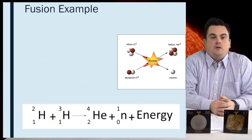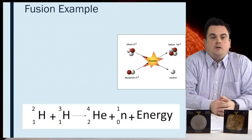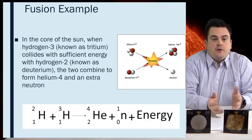Fusion example. In the core of the sun, when hydrogen-3, known as tritium, collides with sufficient energy with hydrogen-2, known as deuterium, the two combine to form helium-4 and an extra neutron. See the equation below.